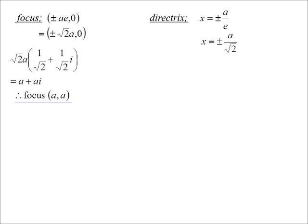Okay. What's the focus? Well, we know originally the focus was plus or minus AE zero. It's going to become plus or minus root 2A zero. But if I multiply, because we're rotating it 45 degrees, if I multiply that by 1 on root 2 plus 1 on root 2I, I get A plus AI. So it works out very nice that the focus is simply the point AA.